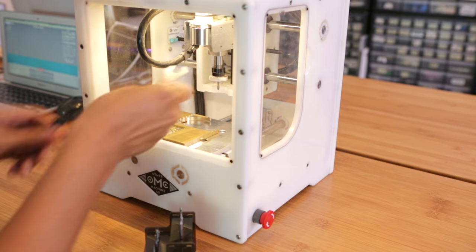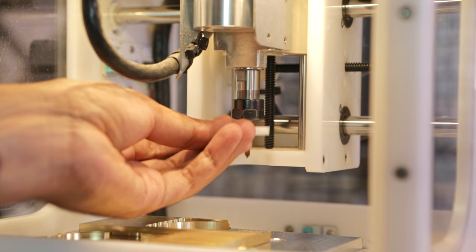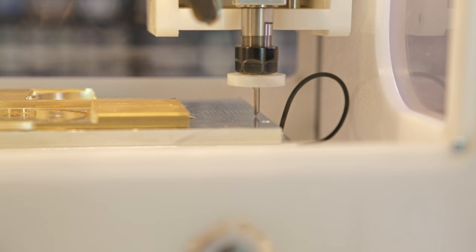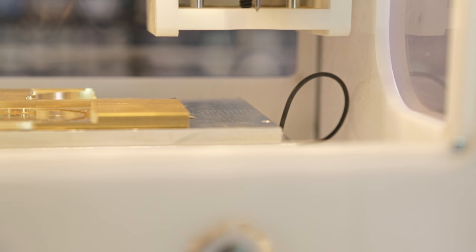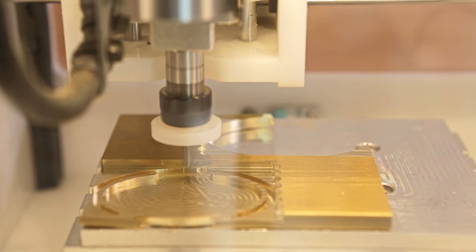The last job I'll do is a chamfer. To do that, I'll need to switch out the tool for an engraving bit. This has an 80 degree edge with a really fine tip. We can use this to create a chamfer along the inside of the base part.